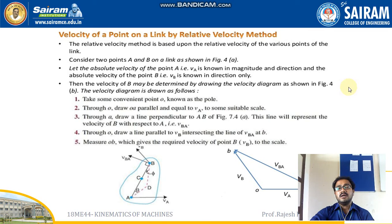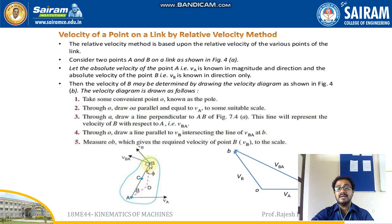Now we discuss the velocity of a point on a link by the relative velocity method. This method is based upon the relative velocity of the various points of the link. Consider two points A and B on a link. The absolute velocity of point A, VA, is known in magnitude and direction, while the absolute velocity of point B, VB, is known in direction only. The velocity VB may be determined by drawing a velocity diagram.